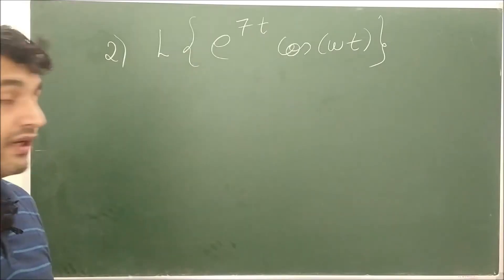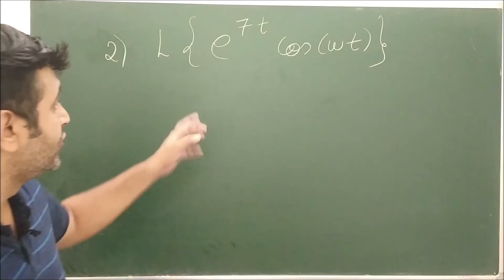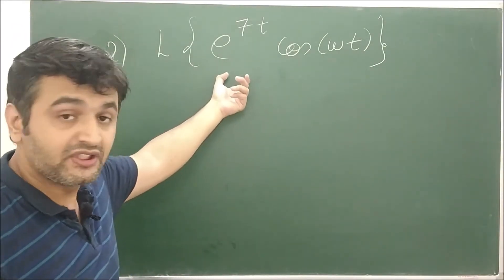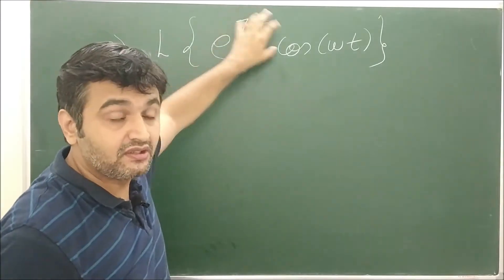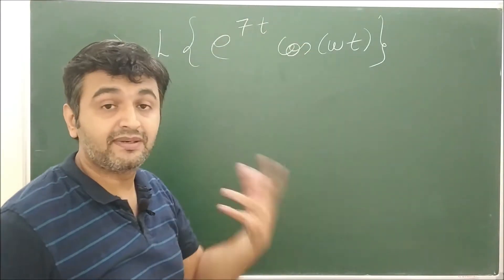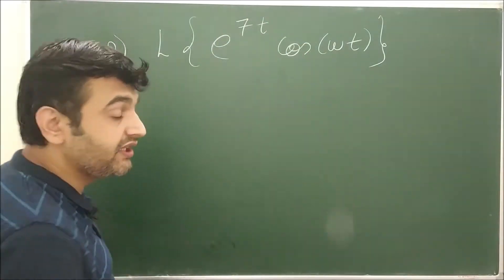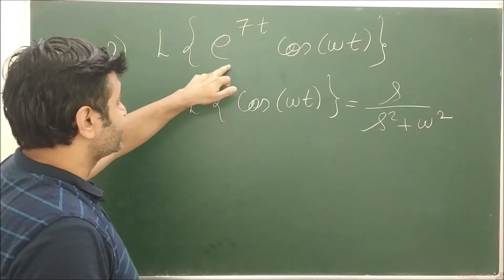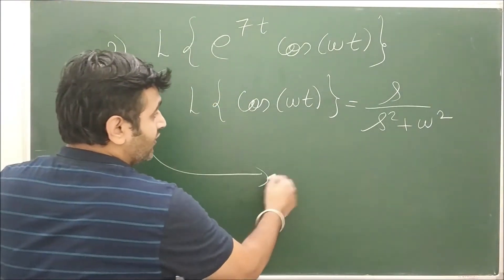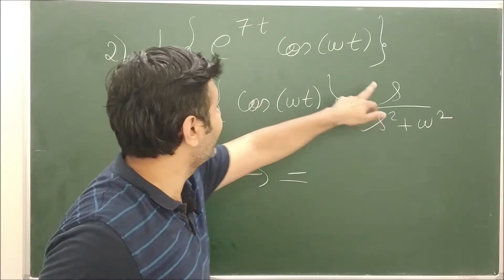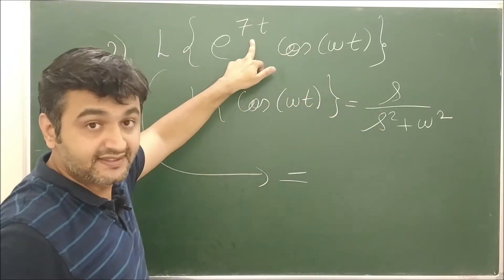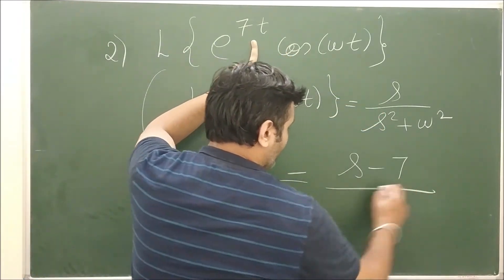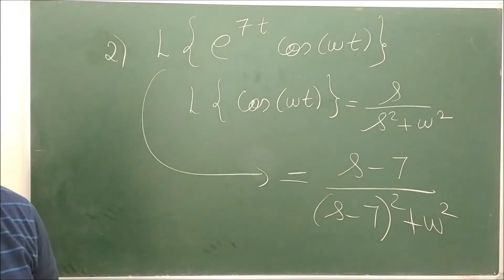Let's take a couple more examples. The question is to find the Laplace of e^(7t) · cos(ωt). There is an exponential, so ignore it — what remains is cos(ωt). The Laplace of cos(ωt) is s/(s² + ω²). Now you simply shift s by 7 units, giving (s − 7) / ((s − 7)² + ω²). That's how the first shifting theorem helps you.